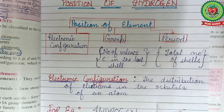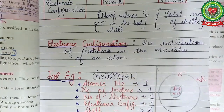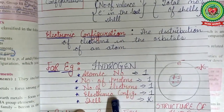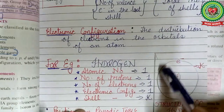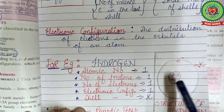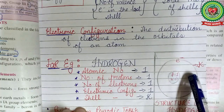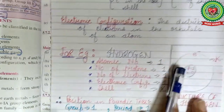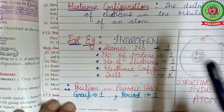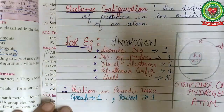Hydrogen has atomic number 1, so it has only one proton and one electron with no neutron. Its electronic configuration is 1. In the structure of hydrogen, the nucleus contains one proton and no neutron, and one electron revolves around the nucleus in the K shell. Therefore, hydrogen belongs to Group 1, since it has only one valence electron, and Period 1, because it has only one shell — the K shell.